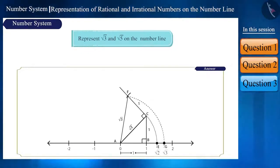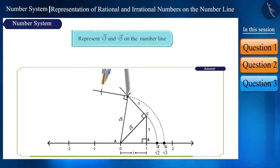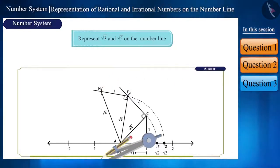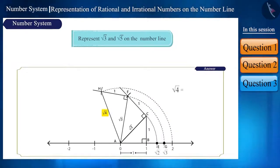We can represent √4 using the same process. And now we get the arc cutting at point 2. This is because the value of √4 is 2.